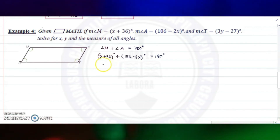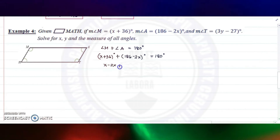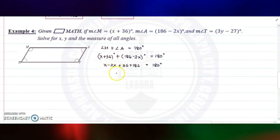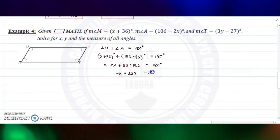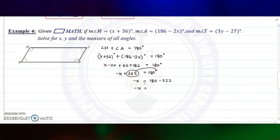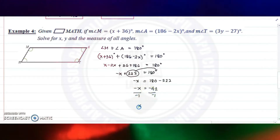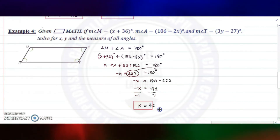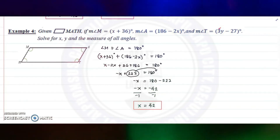Simplifying: x minus 2x plus 36 plus 186 equals 180. That gives negative x plus 222 equals 180. Transposing 222: negative x equals 180 minus 222, which is negative 42. Dividing by negative 1, x equals 42.